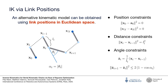Instead, we consider an alternative kinematic model that is parametrized by the positions of individual links. Robot structure is enforced by constraining the distances between consecutive pairs of vertices such that they equal the length of the corresponding link. Additionally, we constrain the positions of individual vertices that correspond to the manipulator base and end-effector. Symmetric joint angle constraints can also be added as inequality constraints onto distances between opposite endpoints of consecutive links.